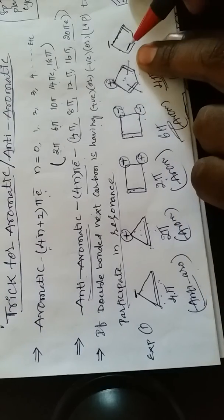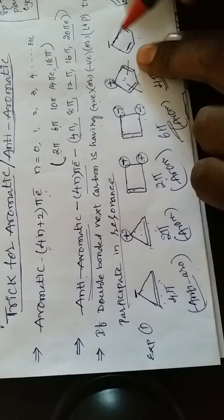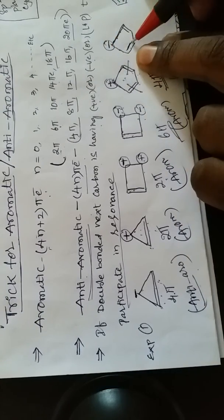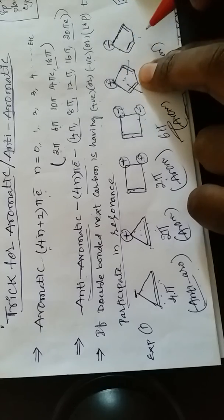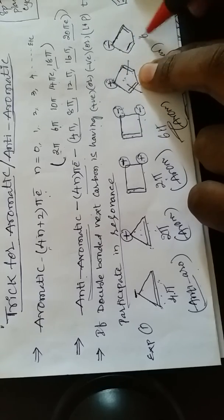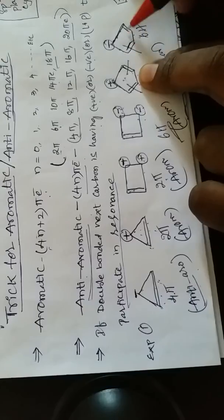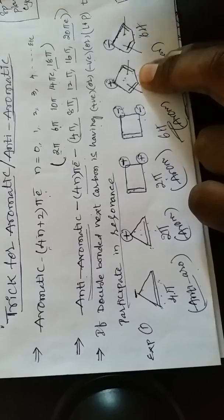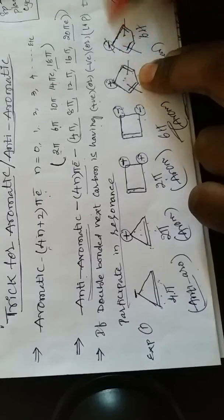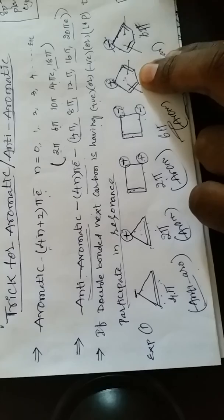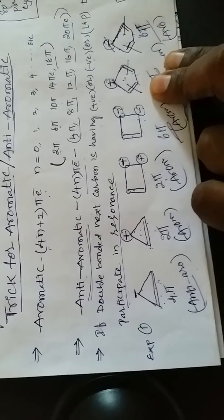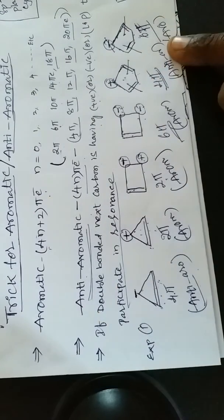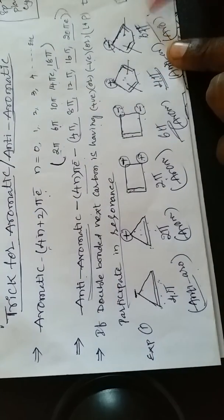Sixth example: a double-bonded carbon followed by a negative charge, then double bond followed by another negative charge. Two pi electrons from each negative charge plus two from the double bond — total six pi electrons. Six pi electrons: this belongs to aromatic.